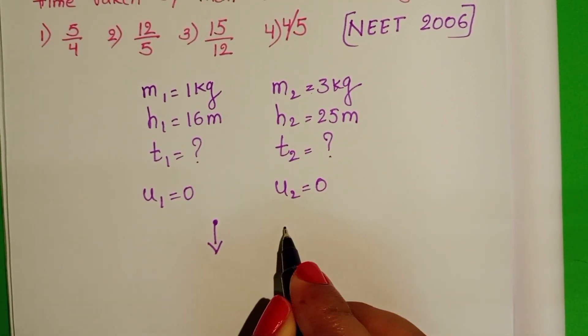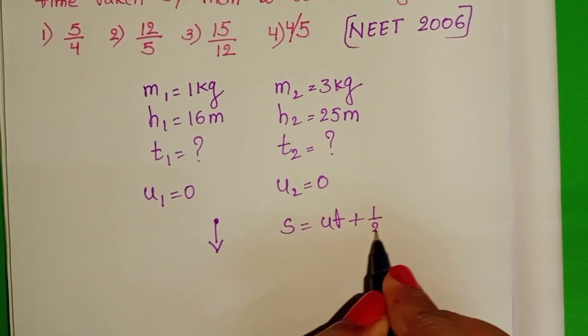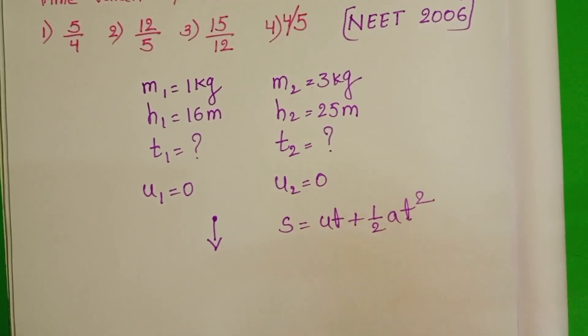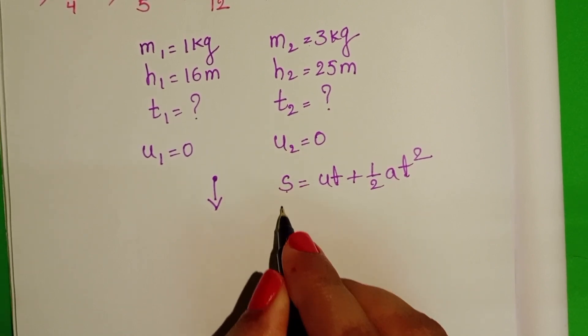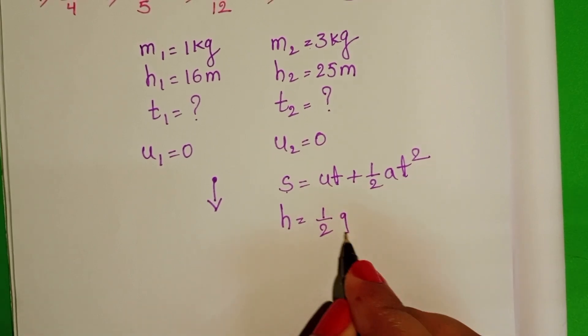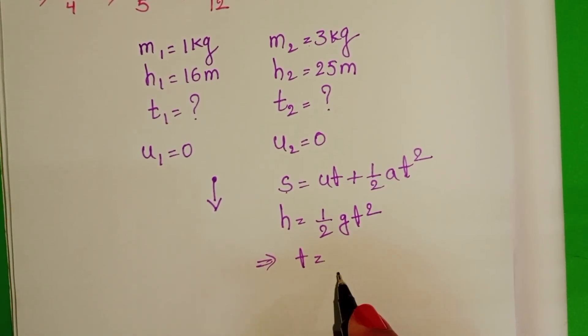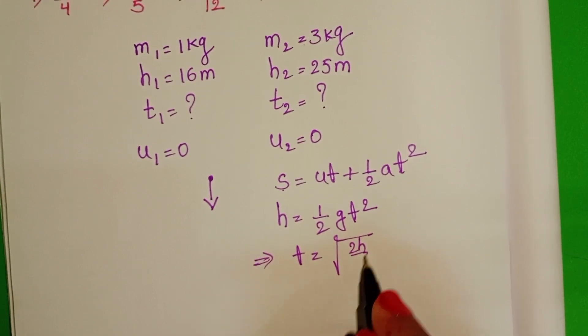Take the equation of motion: S equals ut plus half at squared. In place of S, take height h. Initial velocity u equals 0, acceleration is g. So h equals half g t squared. From this, time t equals square root of 2h by g.